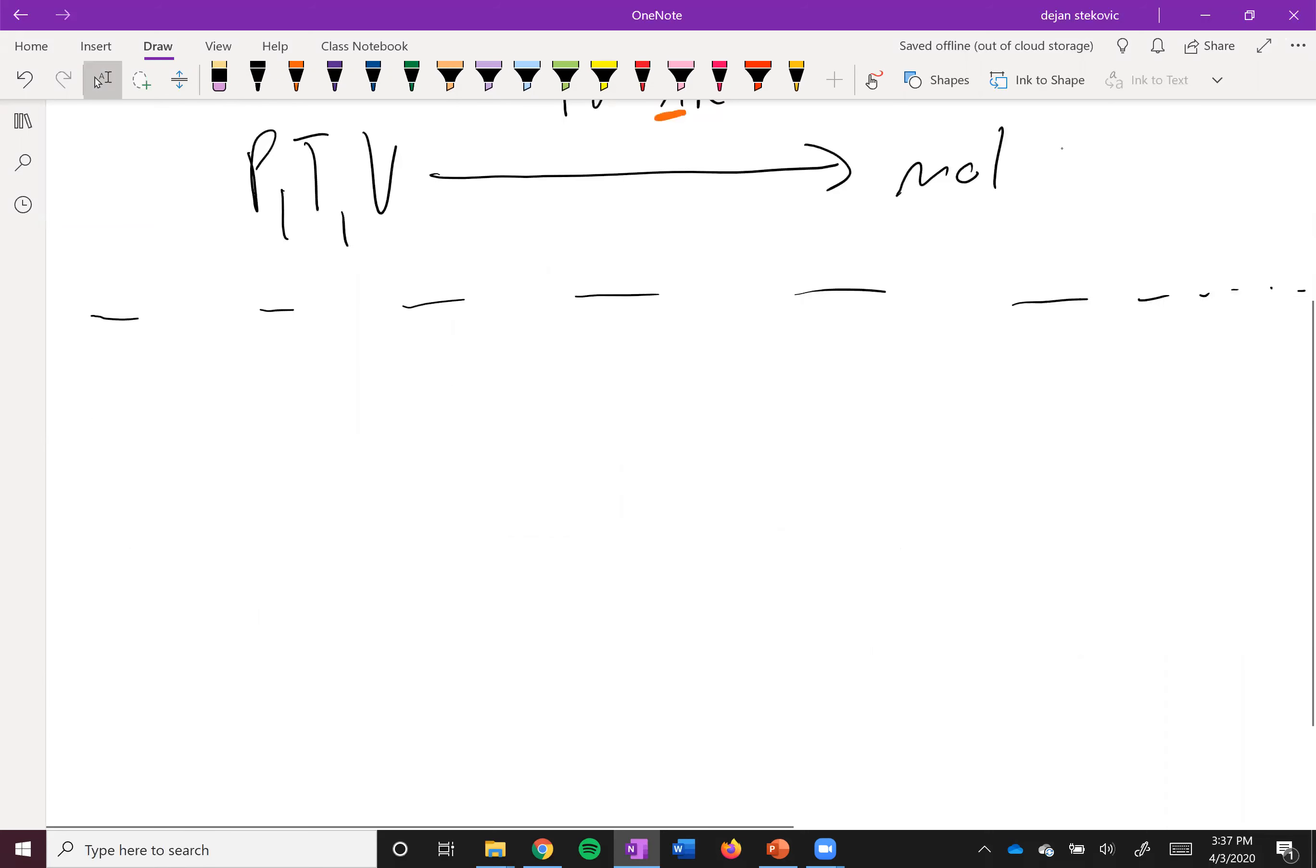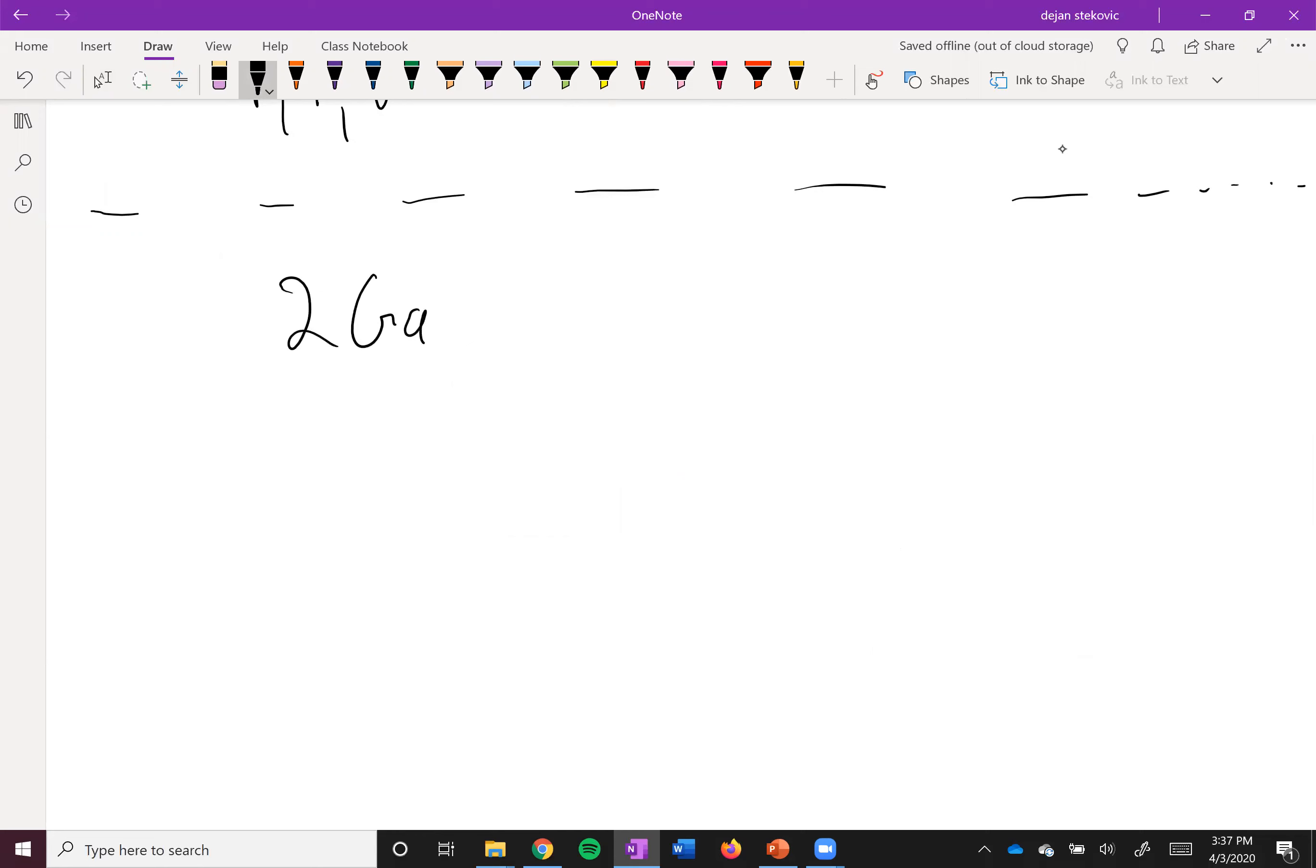So let's take a look at an example. You have two of these galliums plus six HCls reacting to form some gallium chloride. And some hydrogen gas, right? H2, it's a diatomic gas.